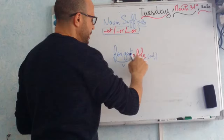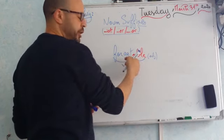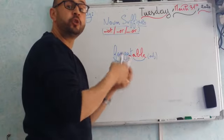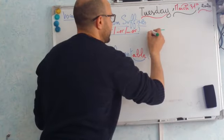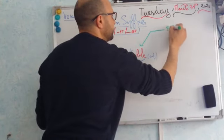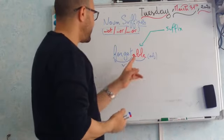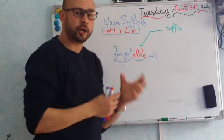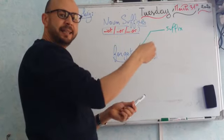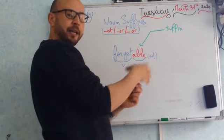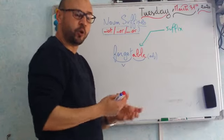So, these letters are added at the end of the word to form a new word. And this is what we call a suffix. What is a suffix? A suffix is a letter, or a group of letters, that we add at the end of a word to form new ones, new words.